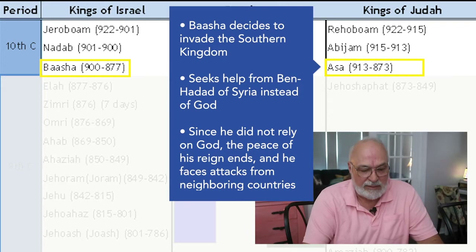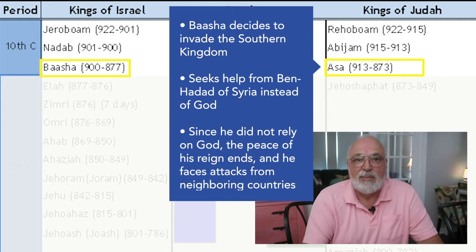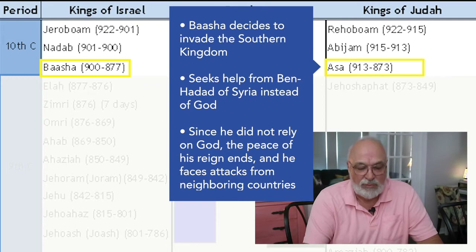Asa, instead of going to God for help this time, asks Ben-Hadad of Syria to come to his aid. Ben-Hadad breaks a treaty he has with Basha and joins Asa in the battle. Asa does gain the victory, but because he did not rely on God, the peace that had characterized his reign to this point is removed and he deals with a number of attacks from neighboring countries. When Asa dies, his son Jehoshaphat comes to reign.